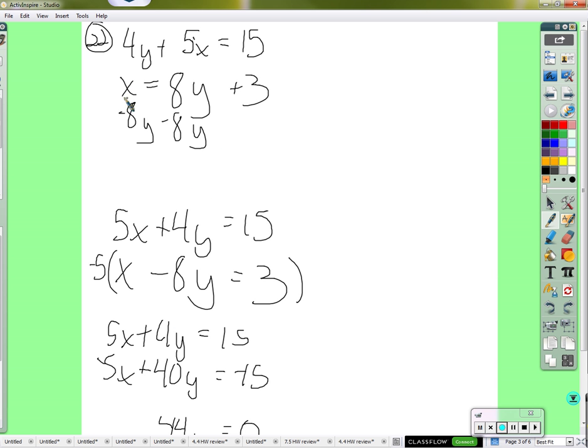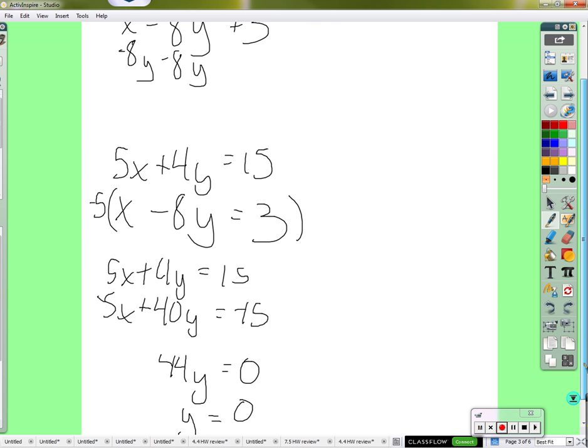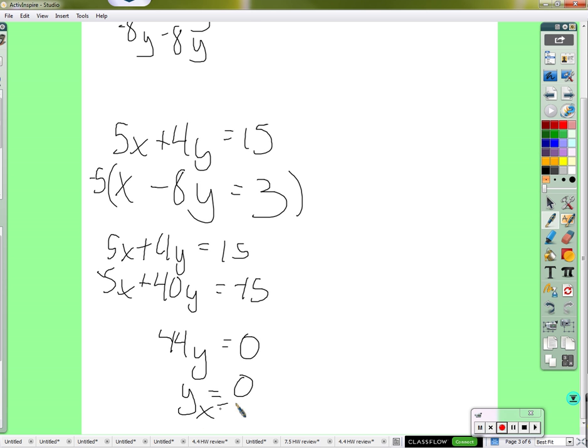If you go back to this one, since it's already got x by itself, I'm just going to plug in 0 for y, which would be really easy to do. If 8 times 0 is 0, plus 3. So x is 3.